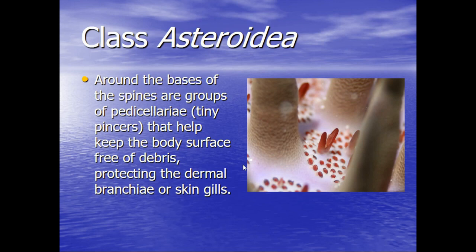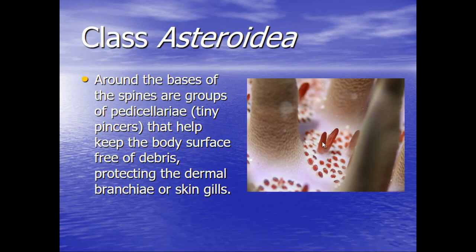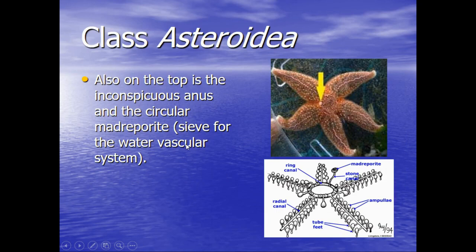Covering all over the top of the sea star, we have spiny structures called pedicillaria, which translates to tiny pinchers. These pinchers help keep the body surface free of debris, protecting the dermal branchia, or the skin gills, which is what they use to breathe. You can see here there is a tiny calcified ossicle that makes the spine, and here's that tiny little pincher. So if the animal has sand thrown on it — from whatever, a fish swims by and some sand gets on top — these little pinchers will grab the individual grain of sand and pass it to the next pincher, removing all the sand from the animal's body and keeping it clean on its surface.